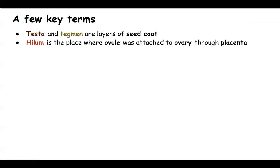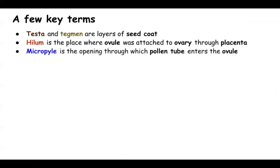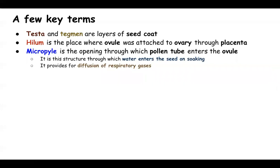The hilum is the place where the ovule was attached to the ovary through the placenta. If the seed is in a pod, as in the case of pea, it will be attached at the hilum. The micropyle is the opening through which the pollen tube enters the ovule during fertilization. It is also the structure through which water enters the seed on soaking, allowing the seed to swell up, and through which respiratory gases diffuse during dormancy and germination.